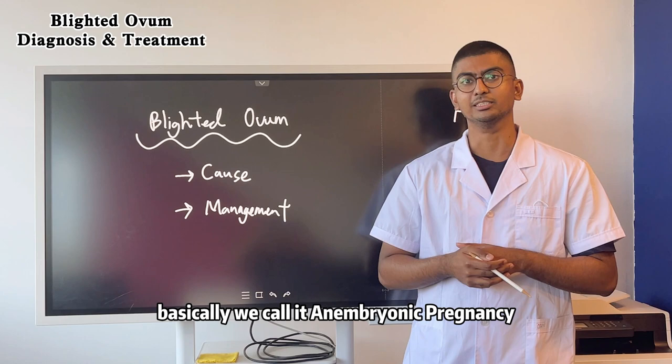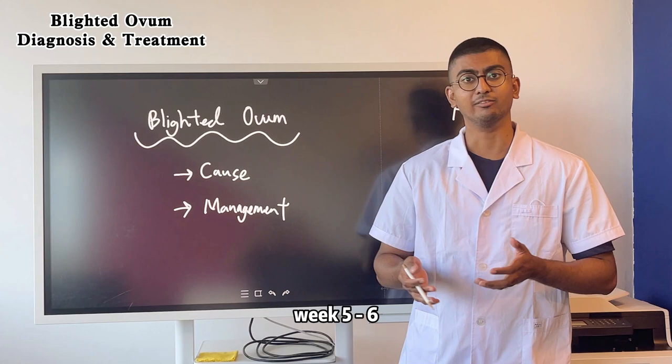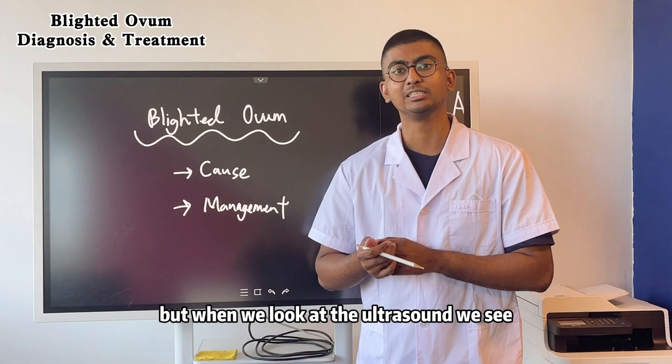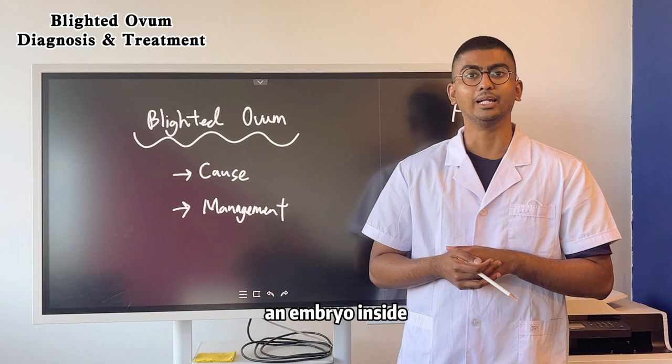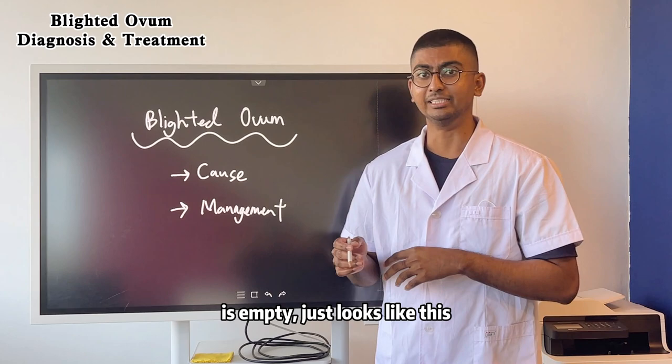This is usually diagnosed when we do an ultrasound of the pregnancy during week 5 or week 6. When we look at the ultrasound, we see a gestational sac, but there is no presence of an embryo inside, no fetal pole — which means this gestational sac is empty. It just looks like this: an empty sac.